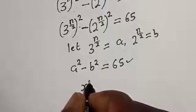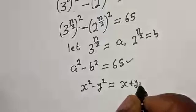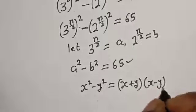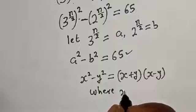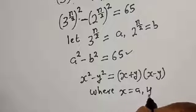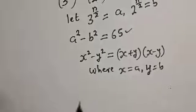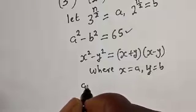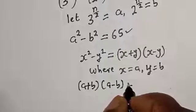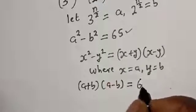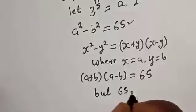Take note of this rule: if you have s squared minus y squared, this is equal to s plus y, multiplied by s minus y. Applying this with s equal to a and y equal to b, we have a plus b multiplied by a minus b is equal to 65.